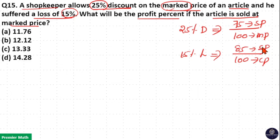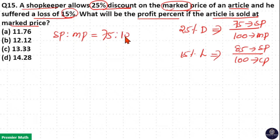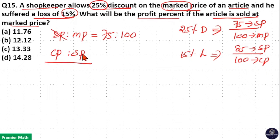Now I need to take the ratio of cost price and marked price, and I can cancel the sell price. The sell price to marked price ratio is 75 to 100. I need to cancel sell price, so the cost price to sell price ratio is 100 to 85.